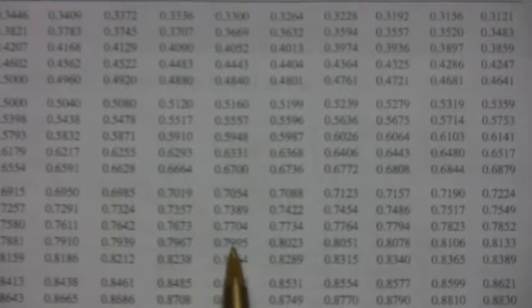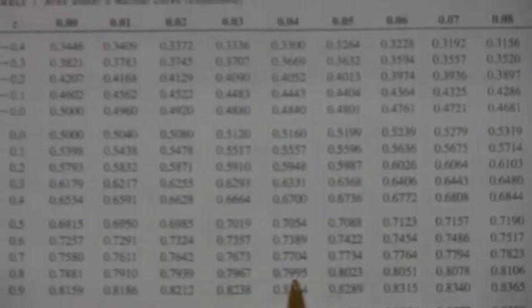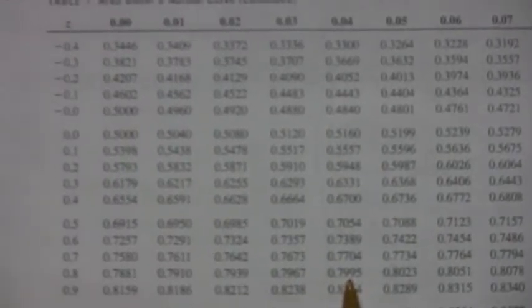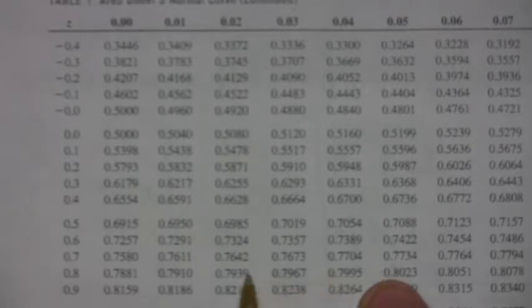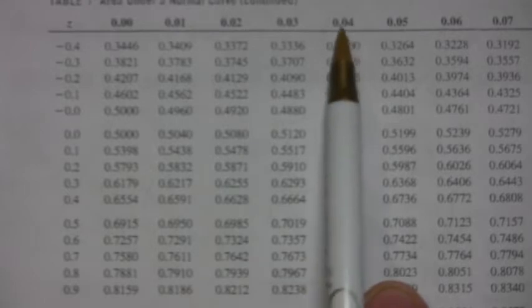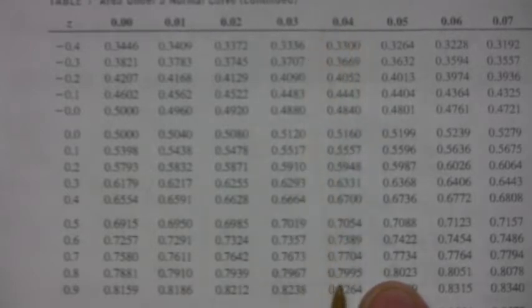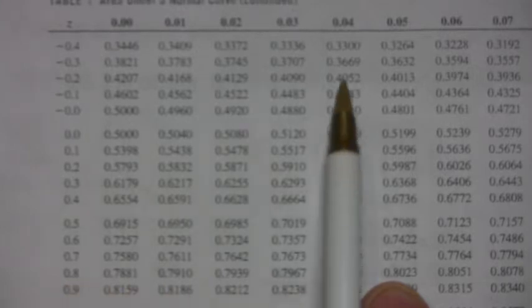And you've got to figure out what that corresponds to. And that's easy enough. You reference it back over to the left and so that's 0.8. And then you go up to the top so it's 0.84. So 0.7995 gives you a z value of 0.84.